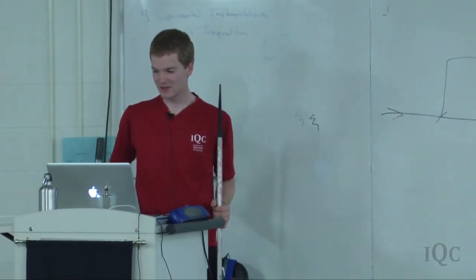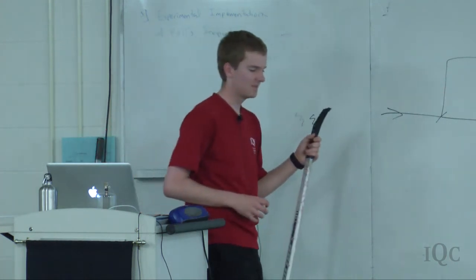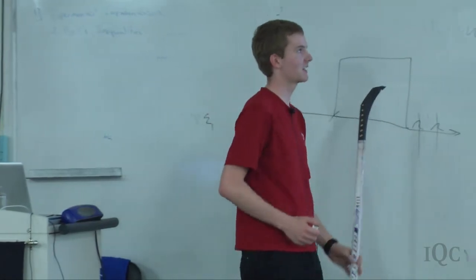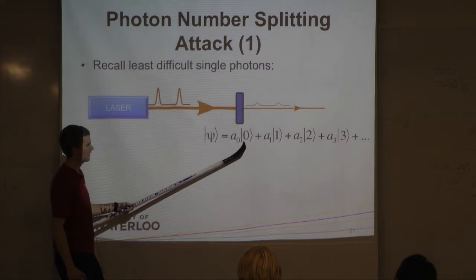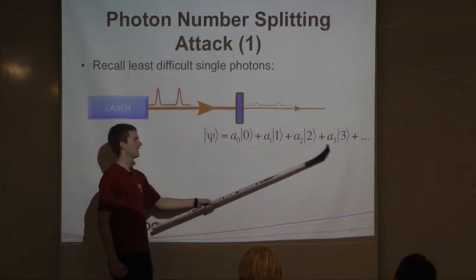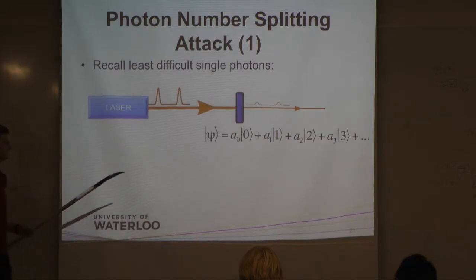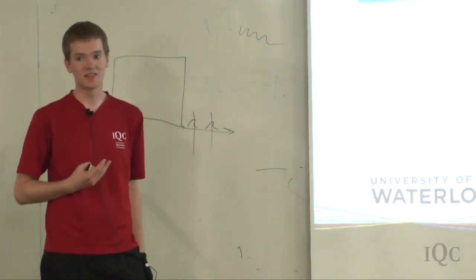So let's start with the photon number splitting attack. This is a really bad attack that can be performed on these laser sources. If you remember the laser, it's always a superposition of zero photons, one photon, and two and more photons. There's always some chance that you can have more than one photon coming out. And since they all go through the same polarizer, they're all polarized the same way. They all have the same quantum state.